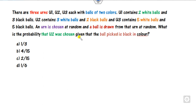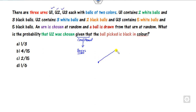If you read the problem clearly, the phrase 'given that' means conditional probability. As I've discussed several times, whenever there is a conditional probability you have to start with Bayes' theorem. Now there are three urns. What is the probability of selecting the first urn? Since they are chosen at random, the probability is one by three, and similarly for the second and third.